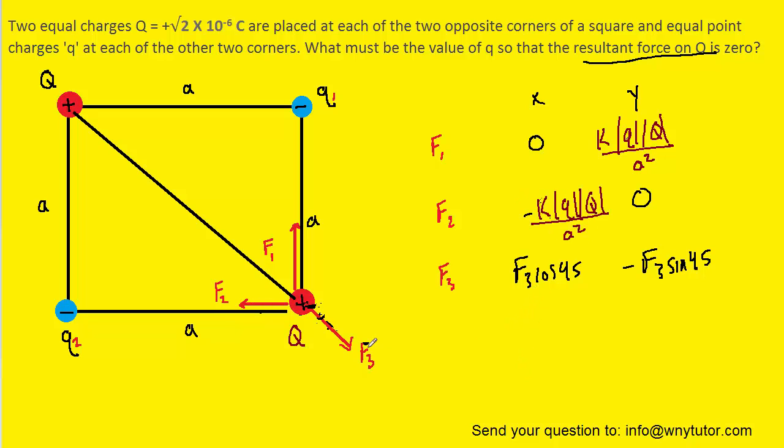And finally, F3, that's acting between the two charges that were labeled with uppercase Q. So we know that F3 is going to be K times uppercase Q times uppercase Q divided by the distance between them squared. Now this distance right here, this diagonal of the square, turns out to be A radical 2.